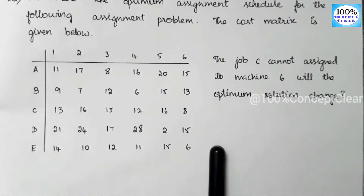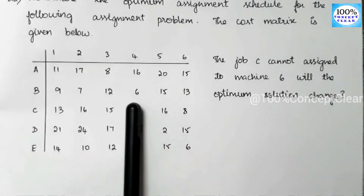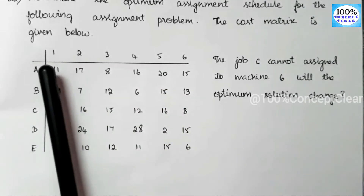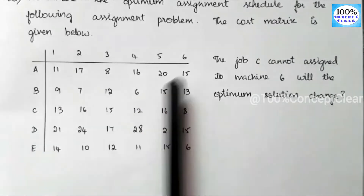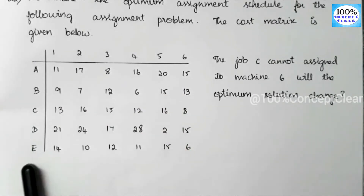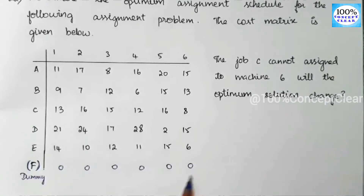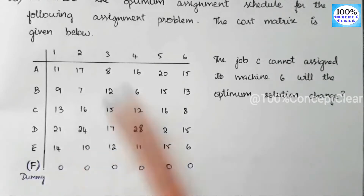The matrix is unbalanced — the number of rows and number of columns are not equal. Row is 1, 2, 3, 4, 5 — 5 rows — and there are 6 columns. Since we have 5 rows and 6 columns, we need to add a 6th dummy row F with cost 0 to balance it. Now rows and columns are equal, so we convert the unbalanced assignment problem to a balanced assignment problem.